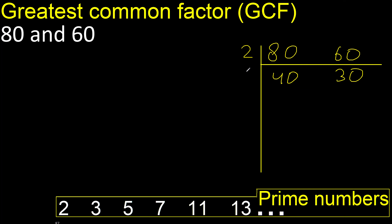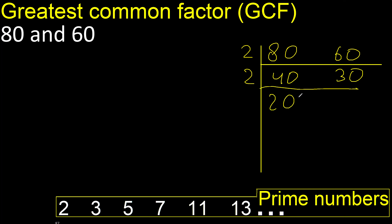Can be divided by 2 again: 40 divided by 2 is 20, 30 divided by 2 is 15.